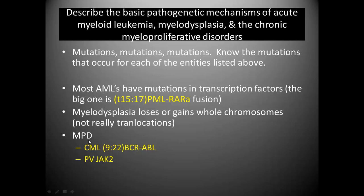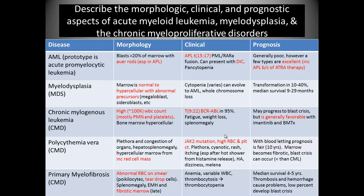For myeloproliferative disorders, meaning abnormal myeloid cells proliferating, we have CML — chronic myelogenous leukemia. Because it's chronic, the cells are mature. It's myelogenous because it's from the myeloid cell line, and it's leukemia because it's coming from the bone marrow and spilling into the blood. This is the one associated with the famous Philadelphia chromosome. The other disease is polycythemia vera, or PV, and that's driven by a JAK2 mutation seen in over 90 percent of cases — in medicine, when something is over 90 percent, that's essentially all of them.